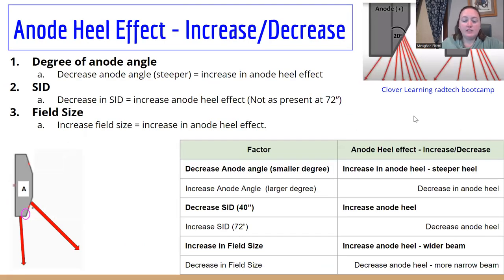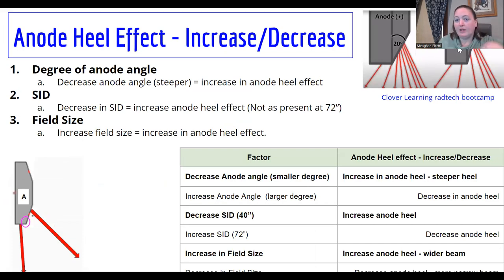So this image here is also from Clover Learning, just to give you a better idea of anode degrees. So you can see the one with the degree of six versus the one of 20. And that's what I mean by increase, decrease is the size of the angle.